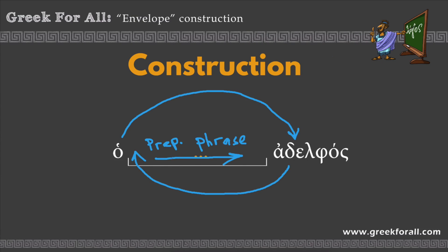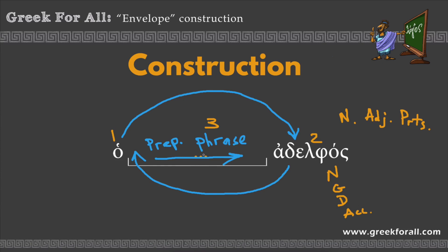In my example we have an article and a noun, but these words could actually be anything — a noun, an adjective, or a participle — and in any gender, number, or case: nominative, genitive, dative, or accusative. So again, first we go to the article, then translate the word, and at the very end we translate the phrase in between. Now that we know the structure and the steps needed to translate it, let's go into the Bible and put this knowledge into practice.